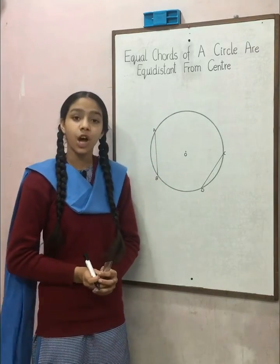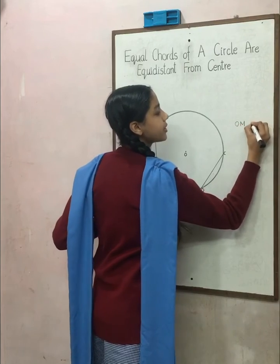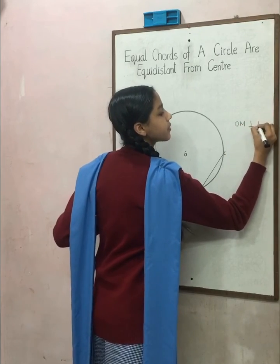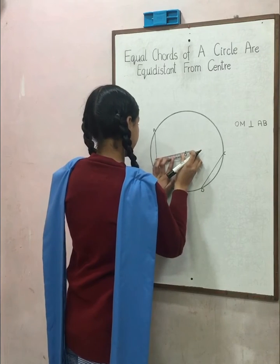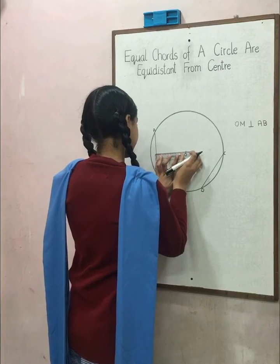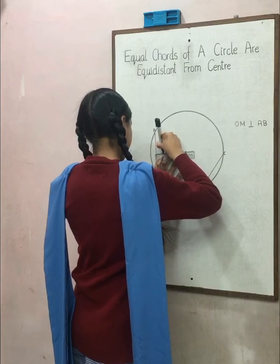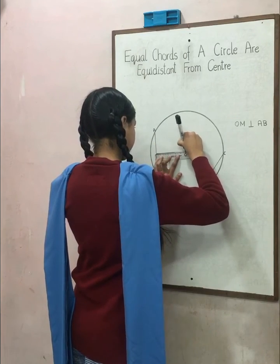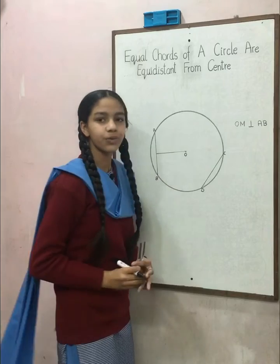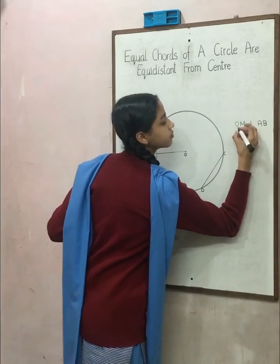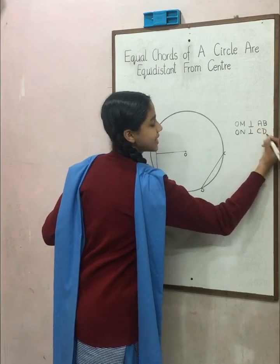Now, draw a perpendicular O, M on AB. Now, draw O, N perpendicular to C, D.